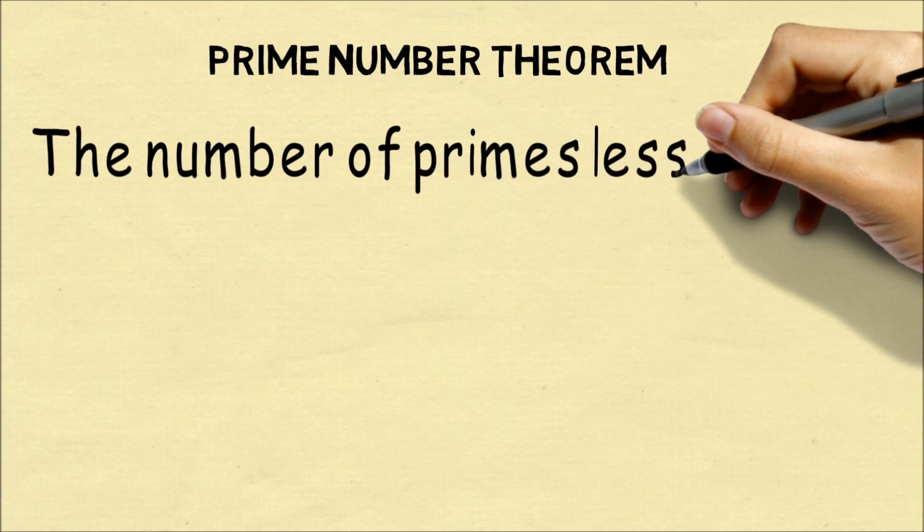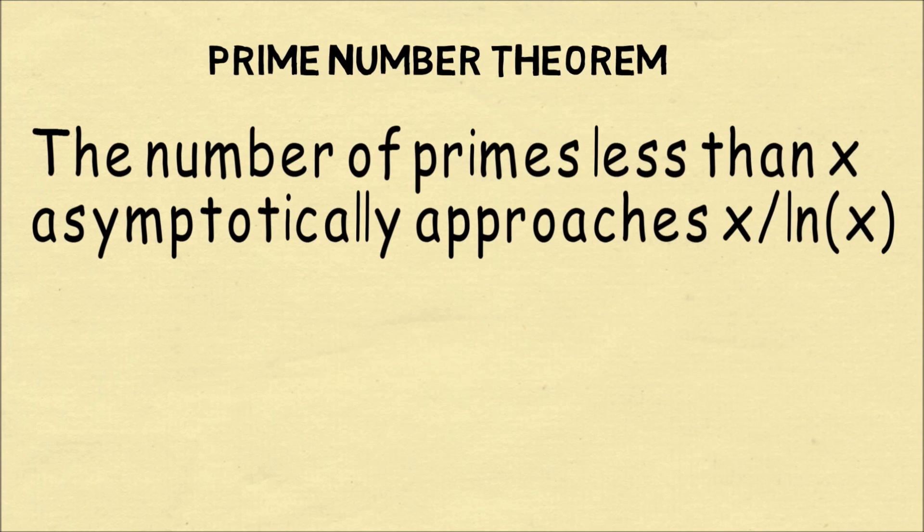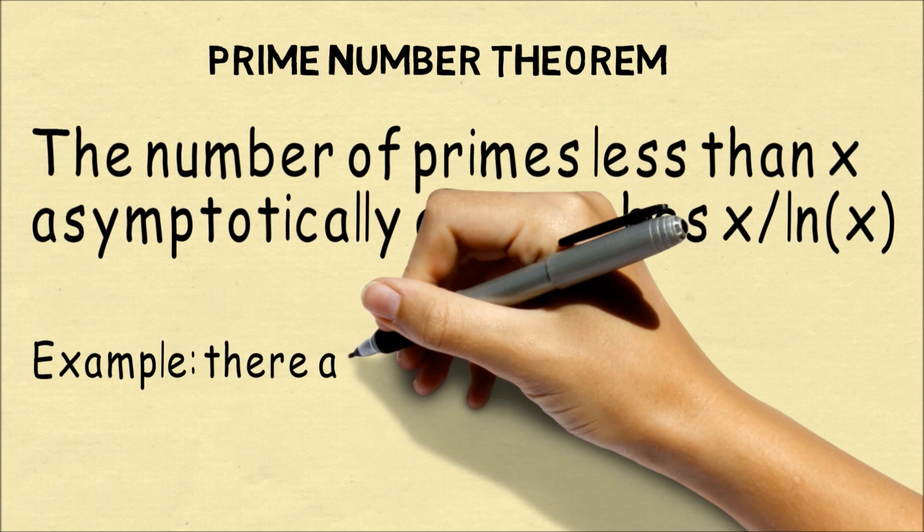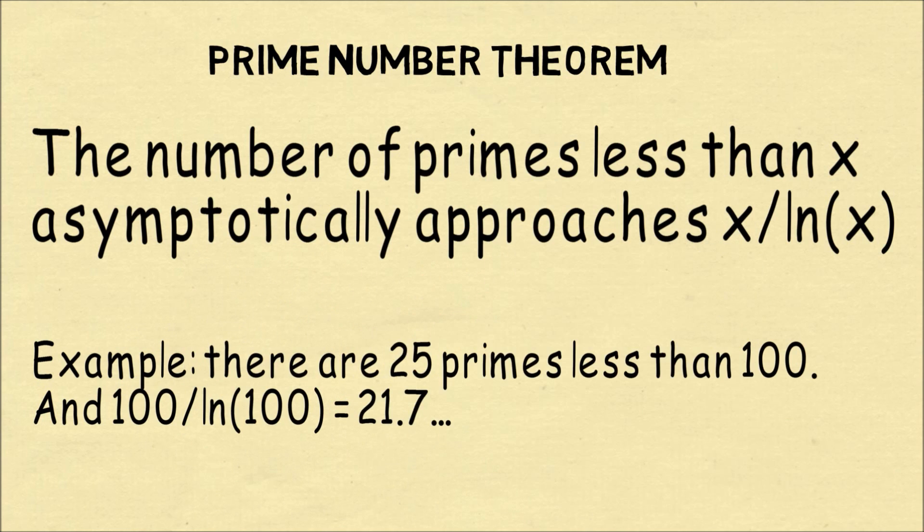Next up is the Prime Number Theorem. This theorem says that the number of primes less than x is asymptotically x divided by the natural log of x. So for example, if x is 100, there actually are 25 primes less than it, and the approximation gets pretty close.